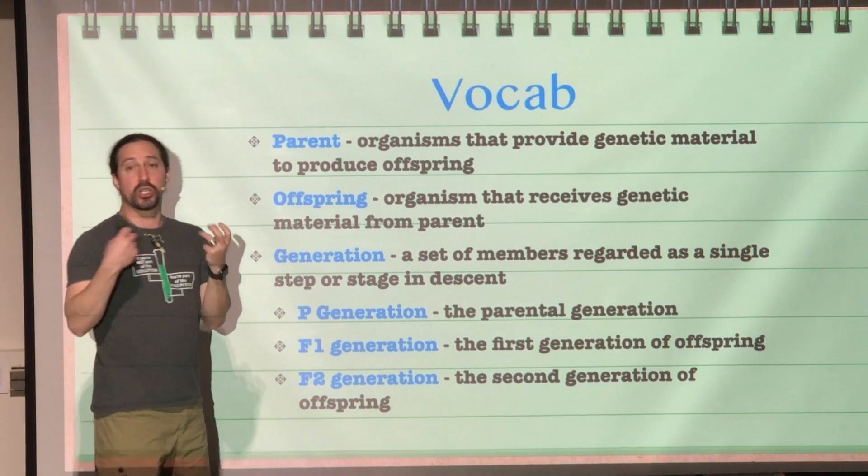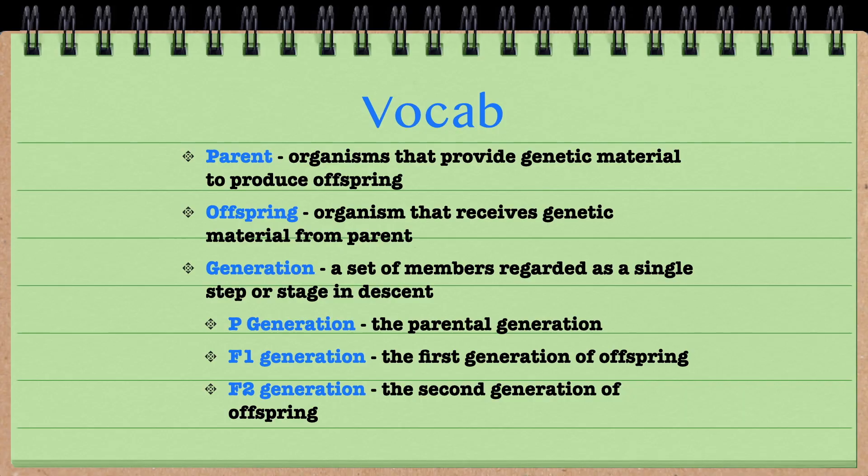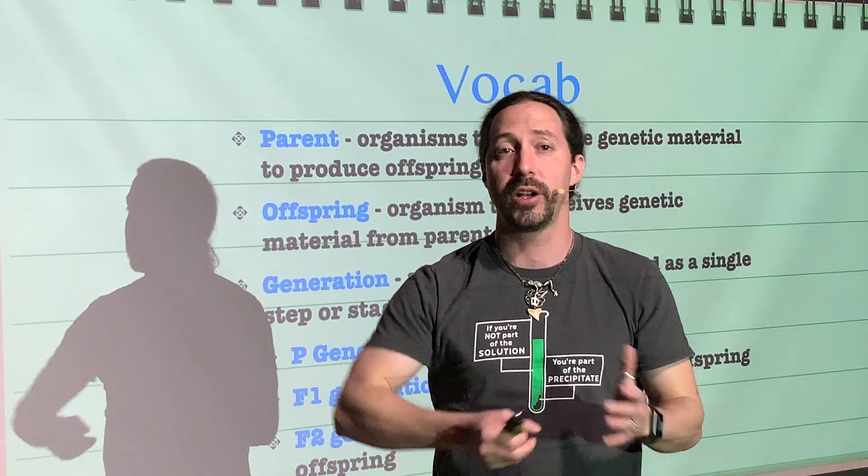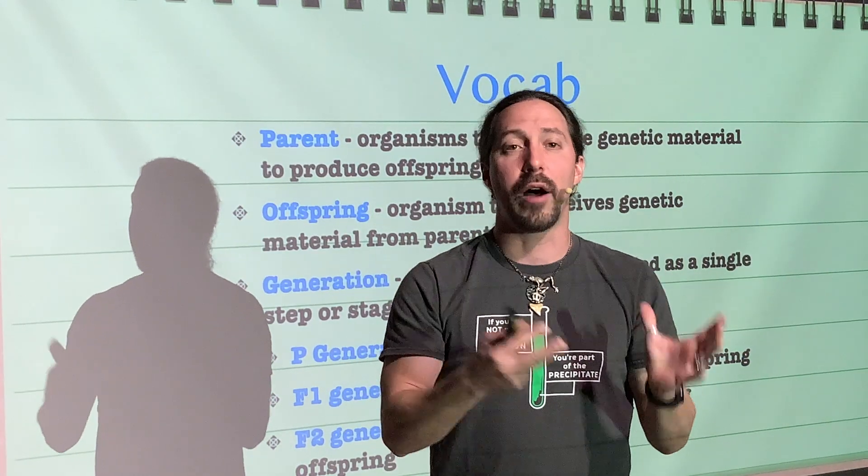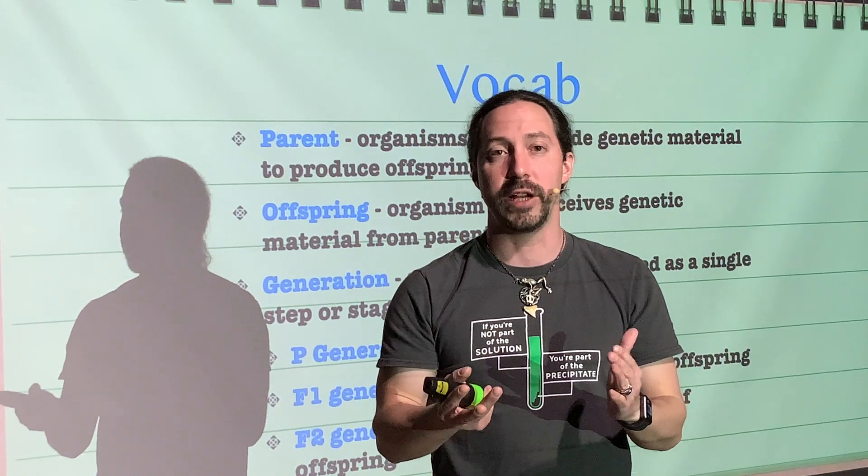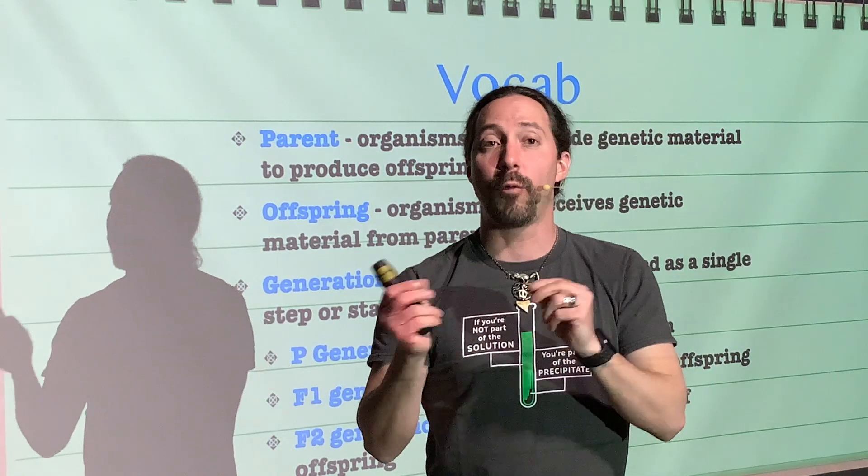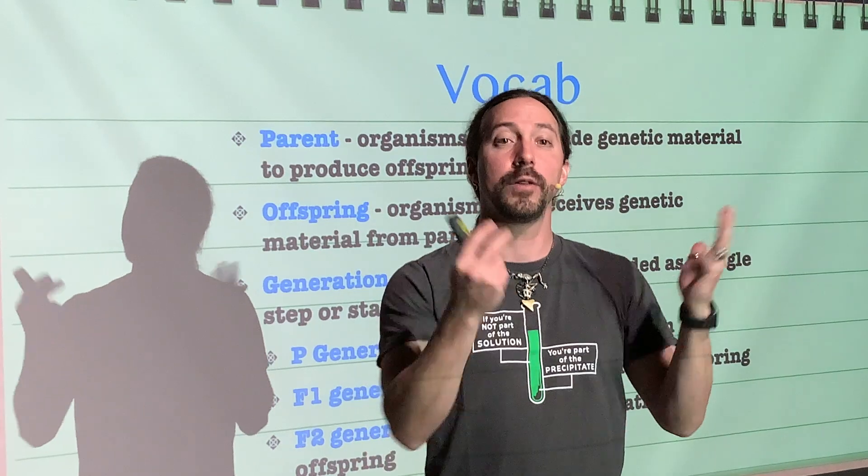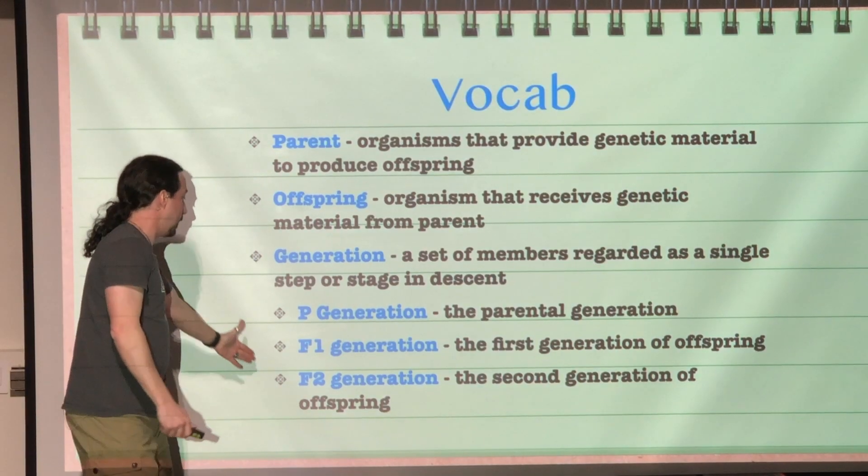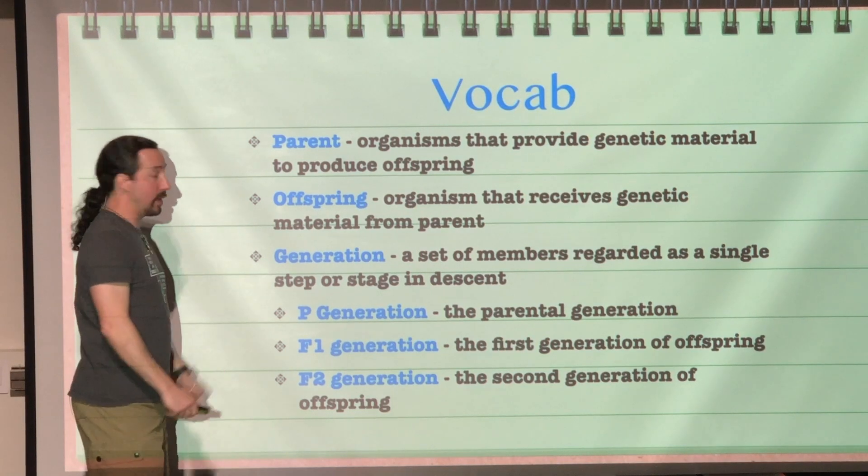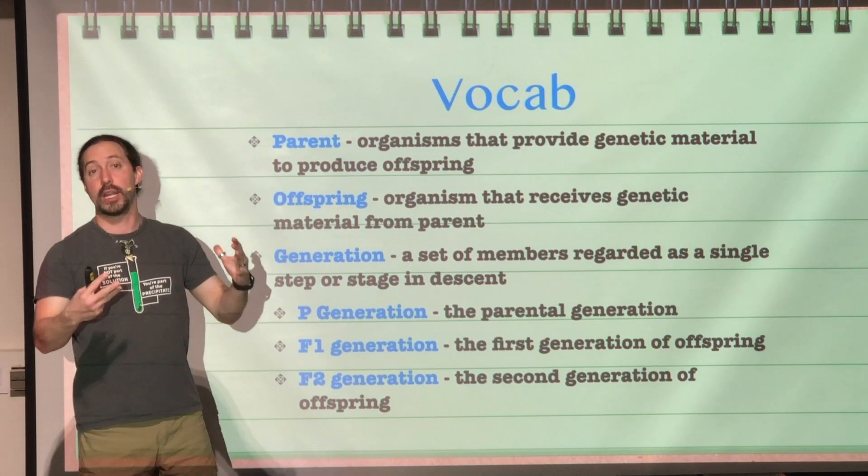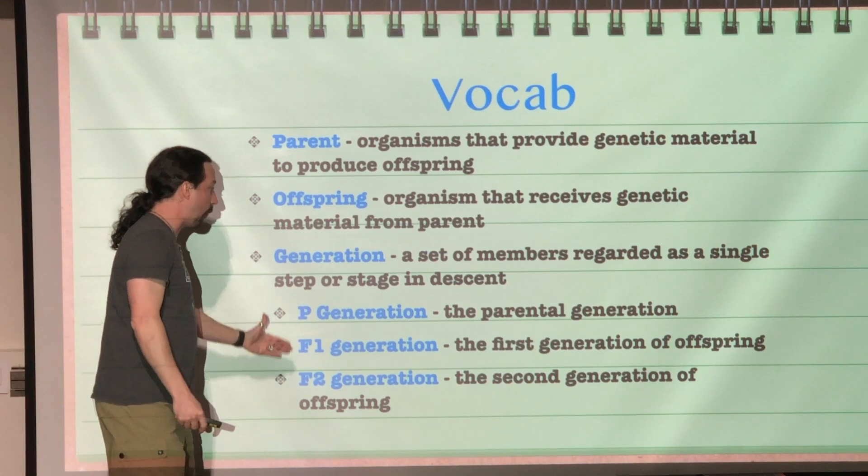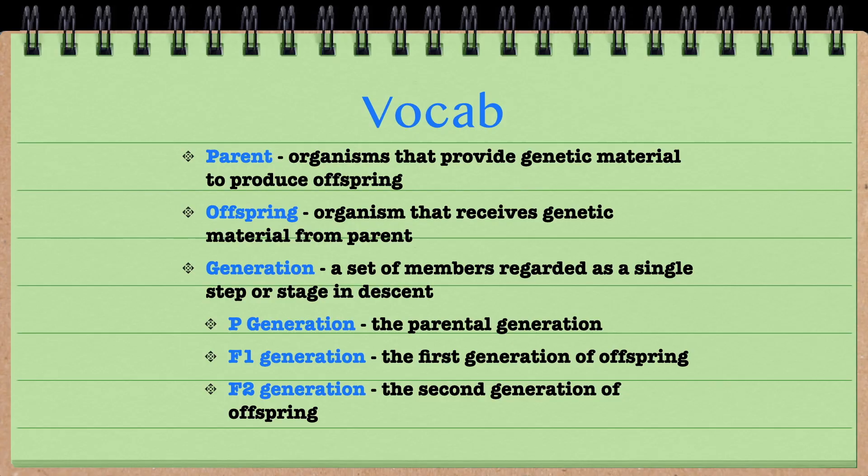We have certain terms we can use. The P generation is the parental generation. The F1 generation stands for the first filial generation—the offspring from the parental generation. The offspring from the F1 generation would be the F2 generation. So if we're talking about the F2 generation, that's the F1's offspring. And the F1 is the offspring of the parental generation, our first generation.